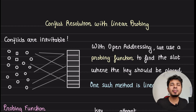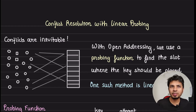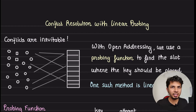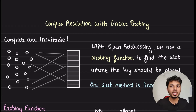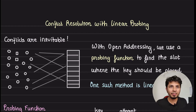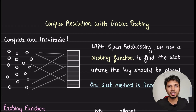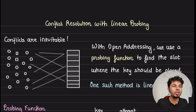Linear probing is one of the simplest and most intuitive ways of handling hash table collisions, and it is based on a technique called open addressing. In this video, the fourth of this hash table internals series, we take a detailed look into linear probing: what it is, how hash table operations work with it, why it is so simple yet efficient, and two challenges that come with adopting it.